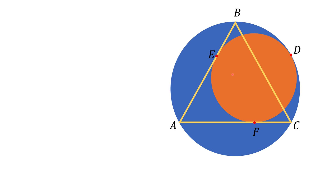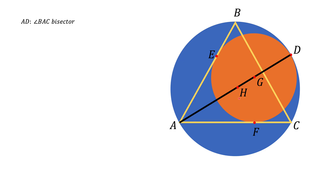This problem is solved quite easily if you notice that AD — the line connecting point A and D — is a bisector of angle A, and also that the centers of both circles, point G and point H, lie on segment AD. We're going to use this fact to solve the problem, and at the end of this video we're going to prove it.